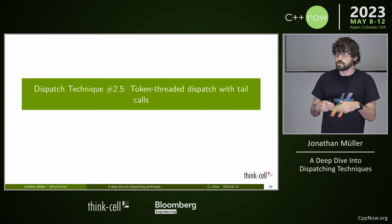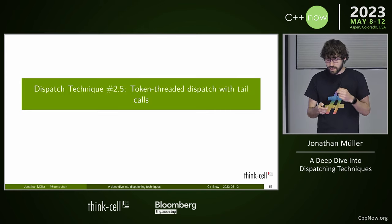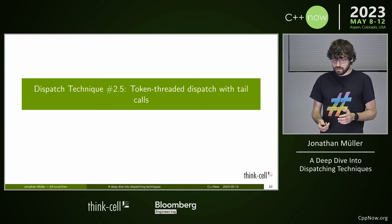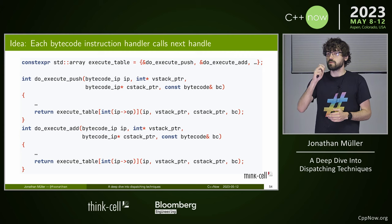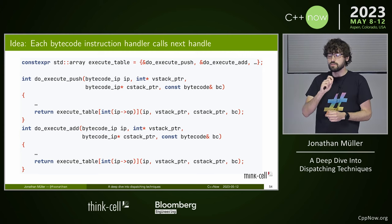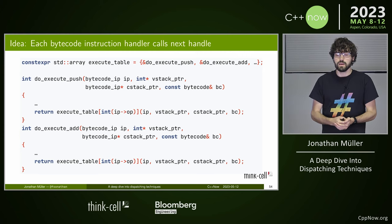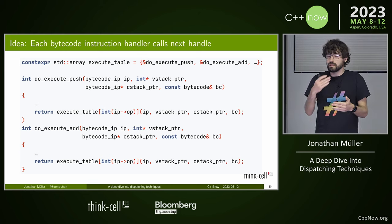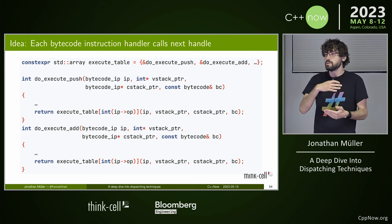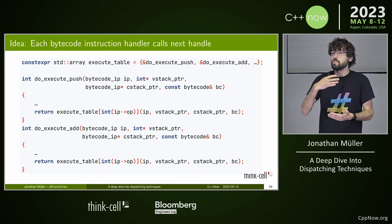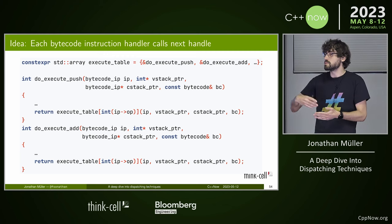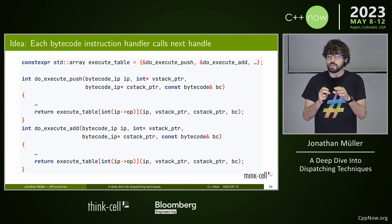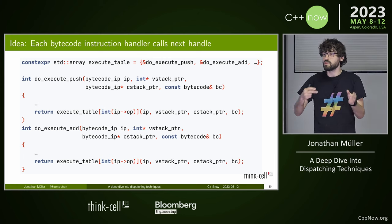The idea with tail calls: write separate functions, but instead of call by reference, use call by value. When we modify the instruction pointer in a function, that doesn't affect the caller since we have a separate copy. So instead of returning to the caller, we go directly to the next instruction — similar to computed goto. We modify the instruction pointer and then call another function with the new value. We still have a table of function pointers, so it's a mix of both techniques.